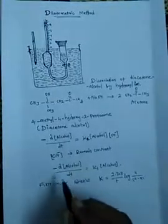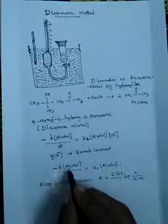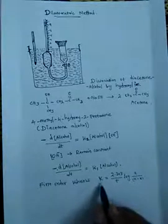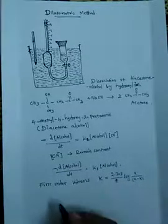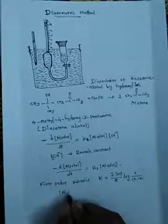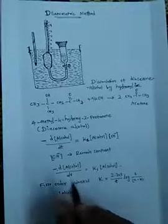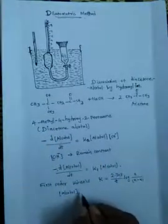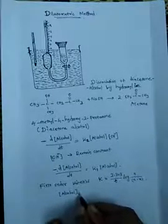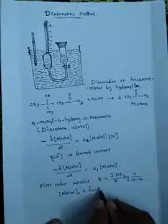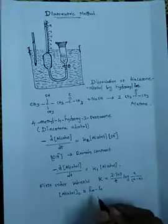This is how we perform the experiment. What we actually measure is the change in alcohol concentration with time, which is indirectly related to concentration. Since this is a first order reaction, we use the first order rate constant equation, and we must know the concentration of alcohol — the concentration of diacetone alcohol at zero time.